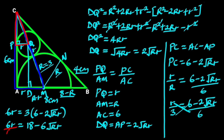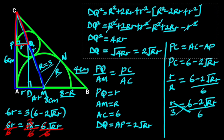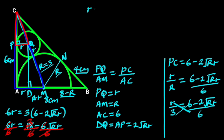Since 6 is common to all the terms, we divide through by 6. 6 cancels 6, 18 divided by 6 is 3, and 6 cancels 6. So we are left with r equals 3 minus √(Rr).